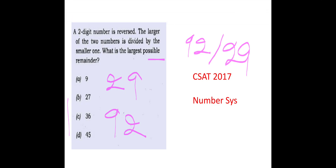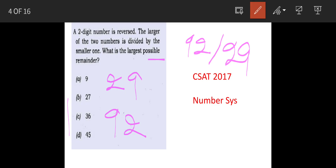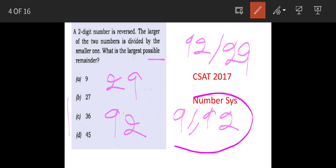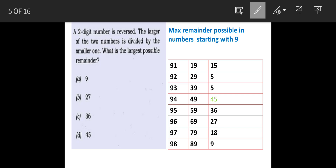So we have to do it by trial and error, and the larger number we have, the more are the chances of getting the largest remainder. So that means our number selection should be something like 91, 92, etc. — big numbers. So the largest 2-digit numbers are listed here, 91 onwards.